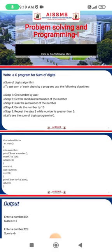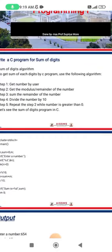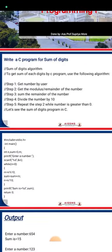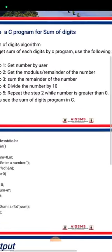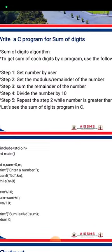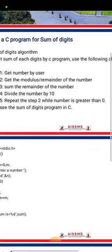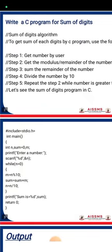What is the algorithm for sum of digits? To get the sum of each digit by C program, use the following algorithm. Step 1: Get the number from the user. Step 2: Get the modulus or remainder of the number. Step 3: Sum the remainder of the number. Step 4: Divide the number by 10. Step 5: Repeat steps 2-4 while number is greater than 0. Let's see the sum of digits program in C.